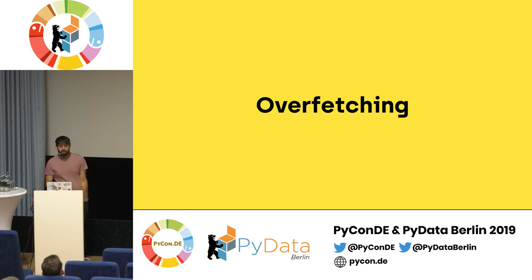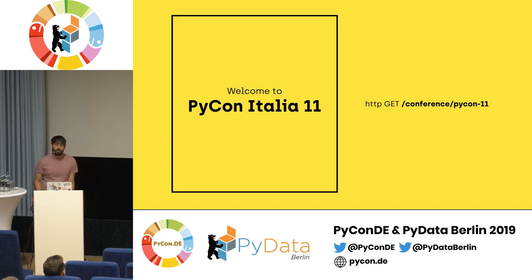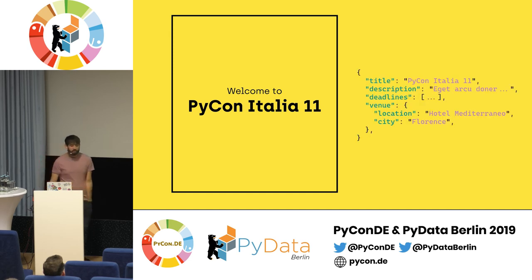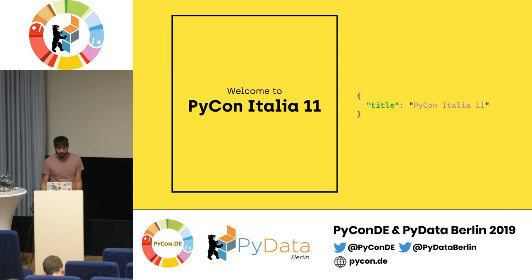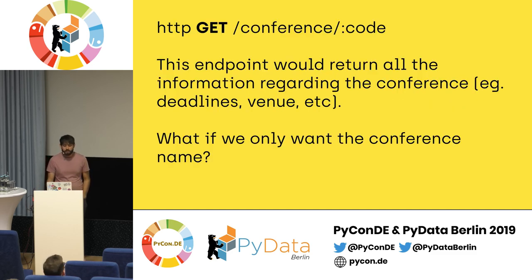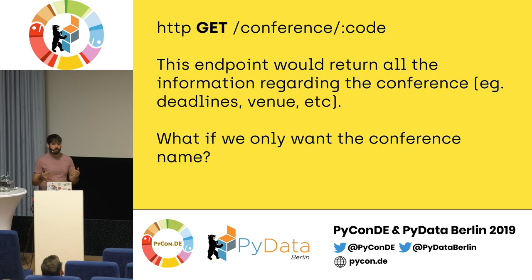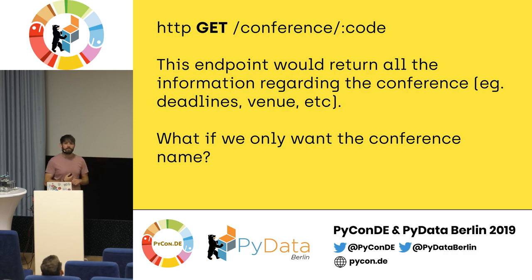On the other spectrum, we have overfetching, which means getting more data than what we actually need. So let's say we're building a welcome screen that says 'Welcome to Python Italy,' and we're going to use the same endpoint we had before. The problem is that it's returning way too much information — we only care about just the title, for example. It might seem a small problem, especially if you have just one client. But if you start having a lot of users or a number of different clients, this matters quite a lot, because you're basically wasting data and CPU usage of your users, and also if your endpoint is doing a lot of database calls, this might be quite intensive when you're only using one field from the API.